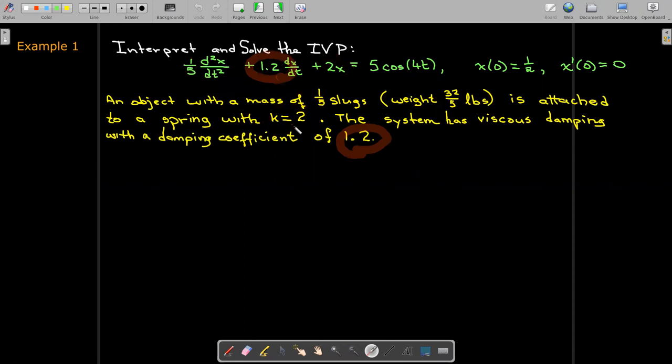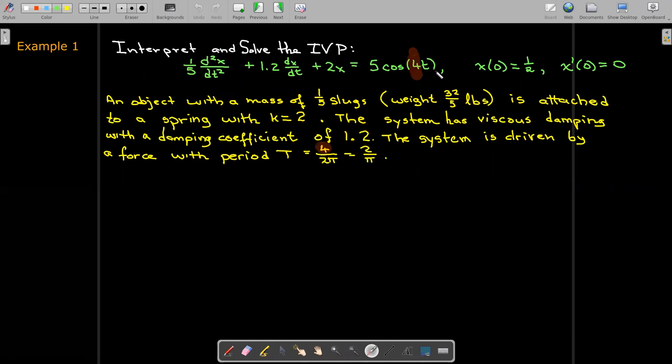What else can we say? Well, the coefficient on the first derivative on the velocity is 1.2, so we're using viscous damping with a damping coefficient of 1.2. The right-hand side tells us something about the external function, so it's being driven by a force with a period of 4 over 2π. 4 is the coefficient on t inside the cosine function, and that could simplify to 2 over π.